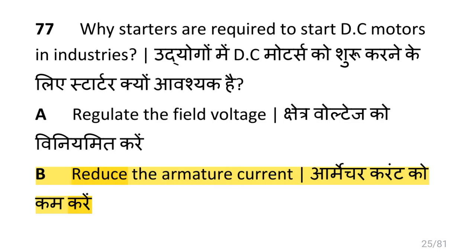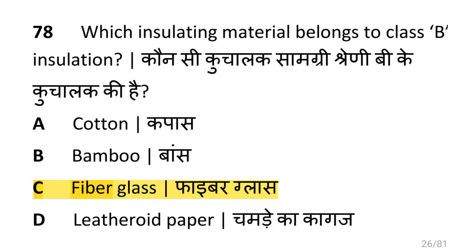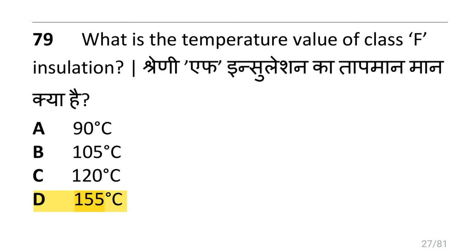Why does the speed control method offer below normal speed in DC shunt motor? That is the armature control method, which offers below normal speed in DC shunt motor. Why are starters required to start DC motors in industries? That is to reduce the armature current. Which insulating material belongs to class B insulation? That is fiberglass. What is the temperature value of class F insulation? That is 155 degrees Celsius.